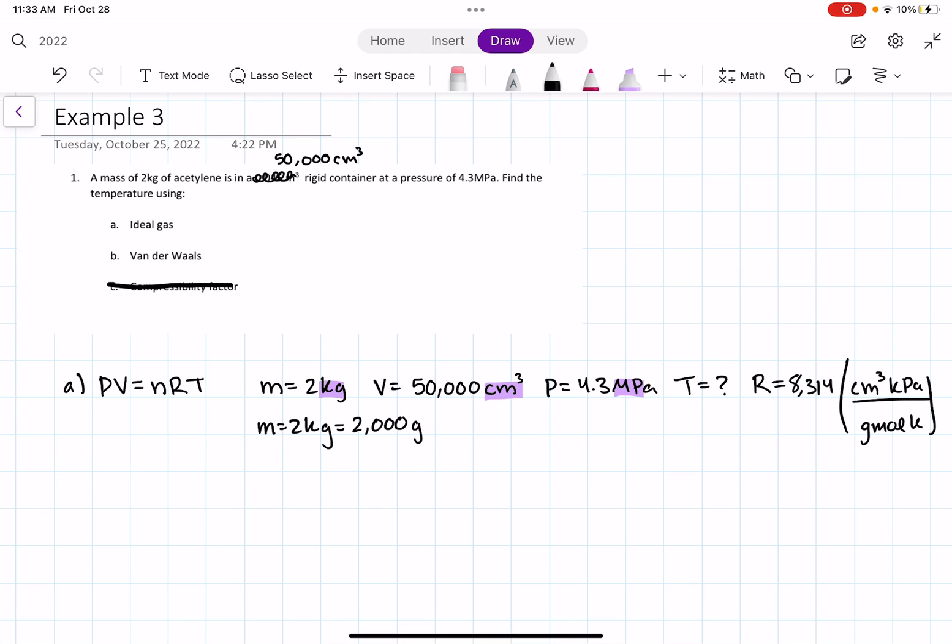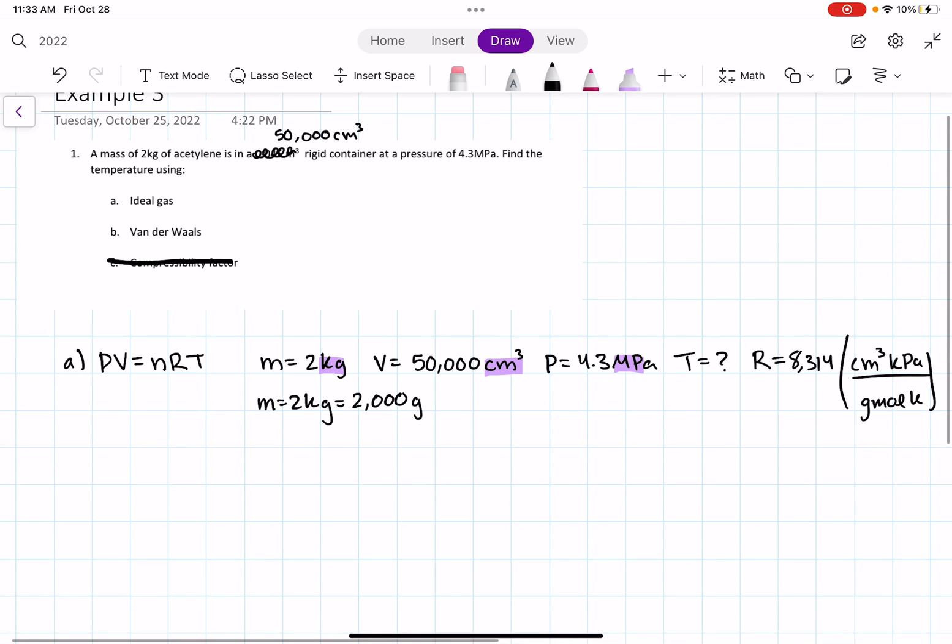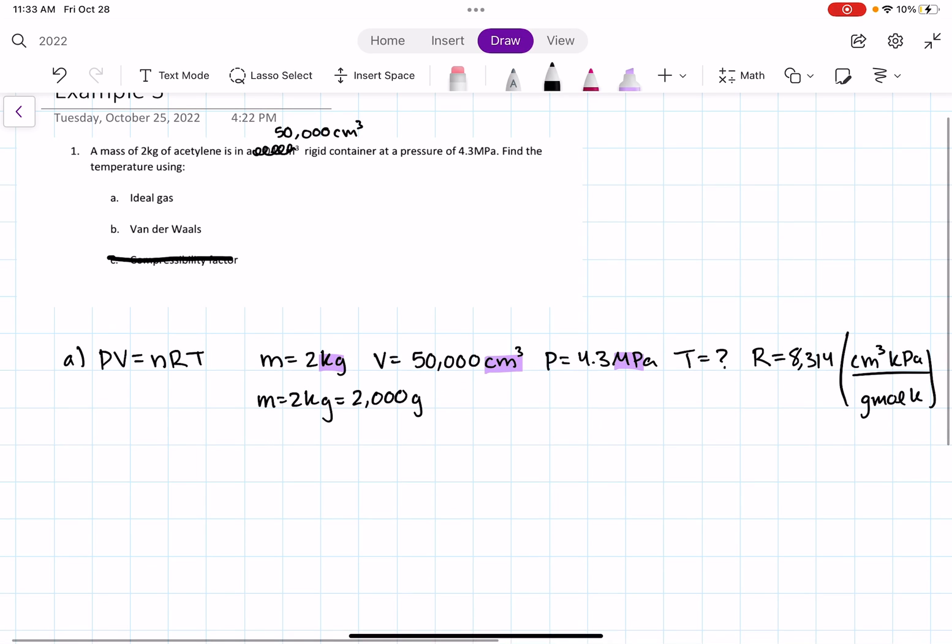So that's great. Now we have our mass units matching our constant. Volume is centimeters cubed. That's fine. Our pressure, that is in 4.3 megapascals. We're going to change it into kilopascals. And if we do the conversion correctly, we get 4300 kilopascals. So that's perfect. Now units matches our R constant.